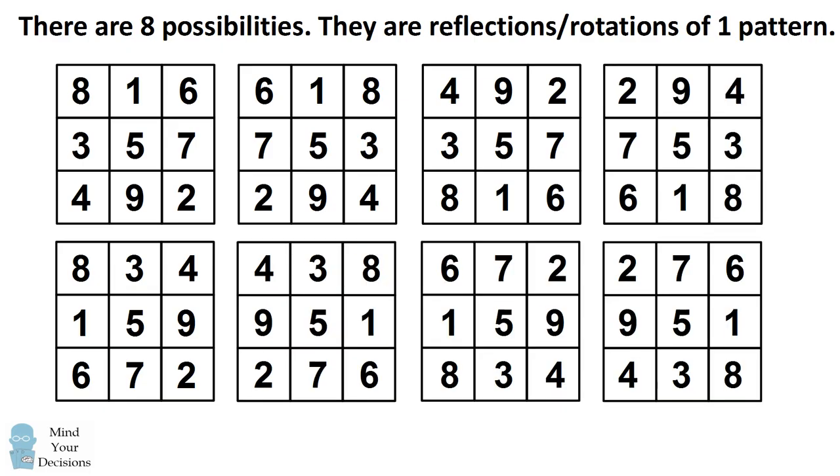And you can continue. You would actually find that all of these magic squares can be obtained by rotations and reflections, or combinations of rotations and reflections of the first pattern. As a technical note, these actually correspond to the symmetries of a square, or the dihedral group of order 8.